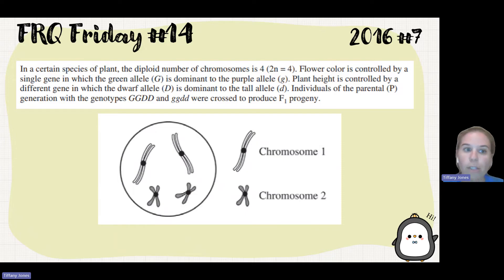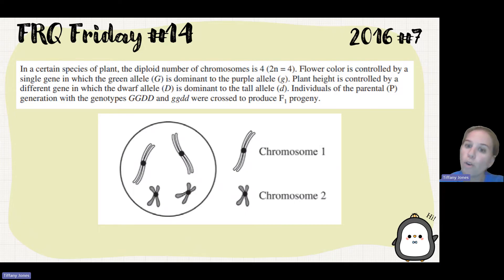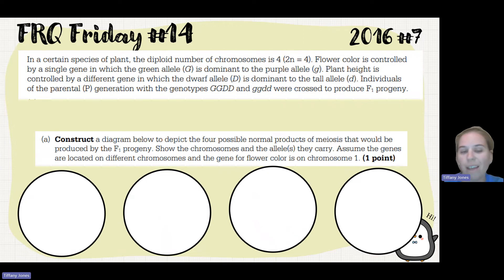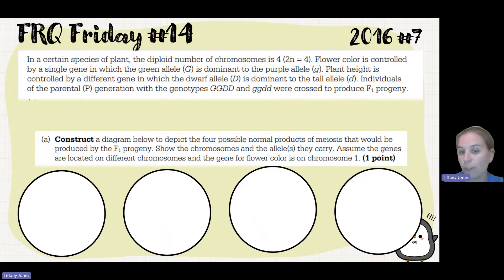Individuals of the parental genotype — homozygous dominant for both traits and homozygous recessive for both traits — were crossed to produce the F1 progeny. We have to construct a diagram to depict the four possible products of meiosis that would be produced by the F1 progeny, showing the chromosomes and the alleles they carry. Assume the genes are located on different chromosomes and the gene for flower color is on chromosome 1.